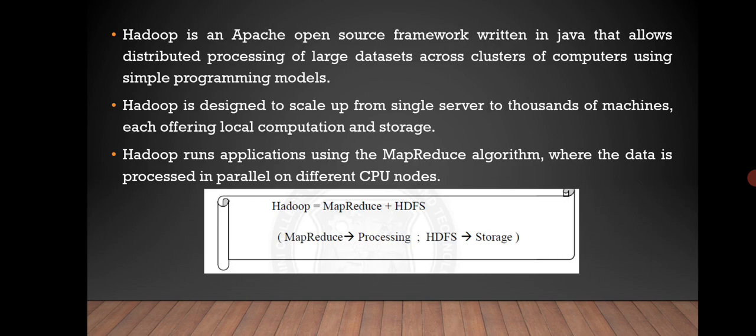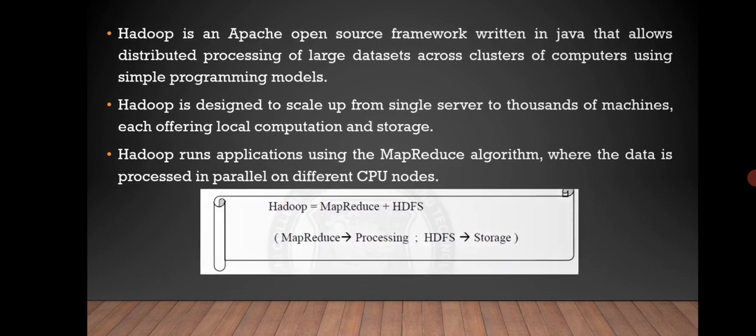Hadoop runs the applications using the MapReduce algorithm where the data is processed in parallel on different CPU nodes. So we can write: Hadoop equals MapReduce plus HDFS. MapReduce is for processing and HDFS is for storage.